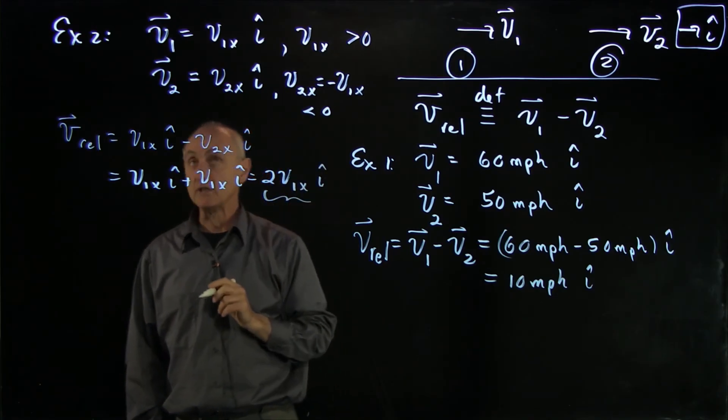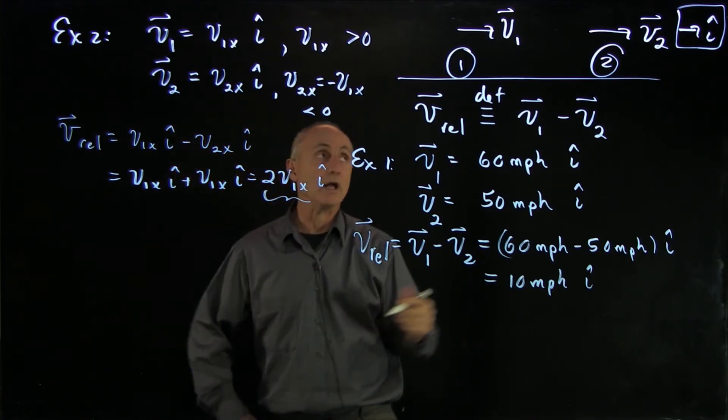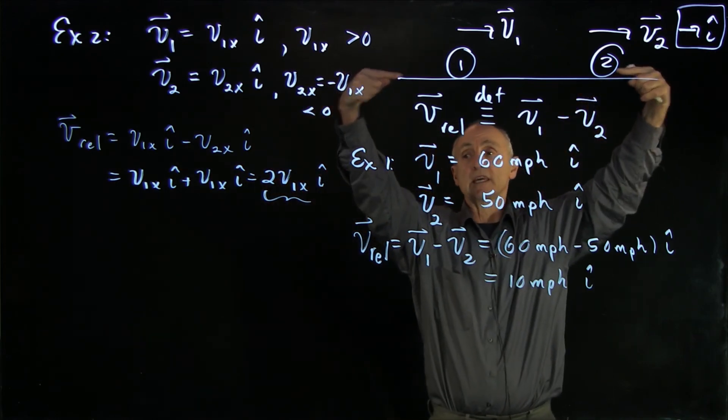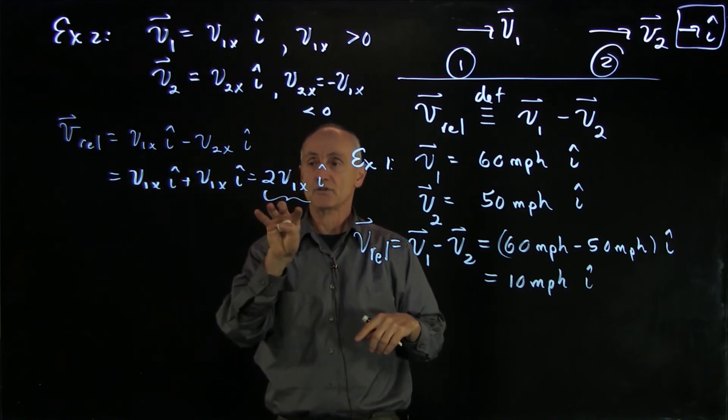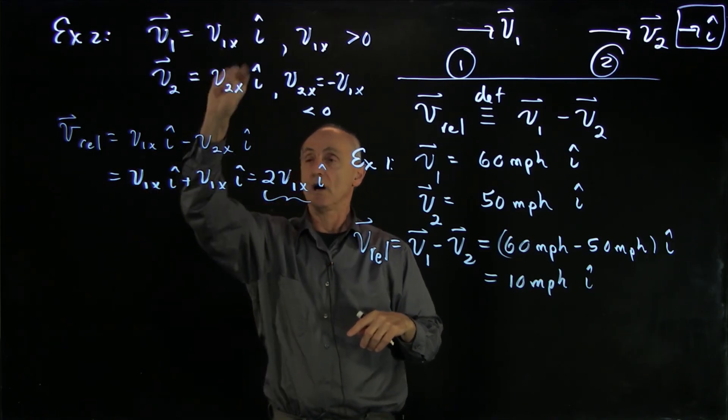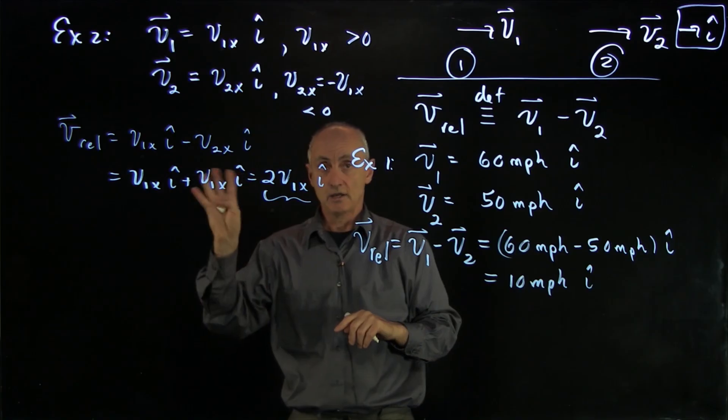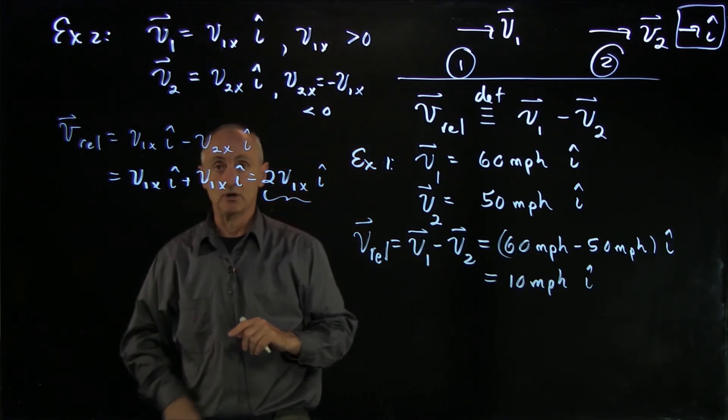So the relative velocity in this case has a component that's twice the speed of v1. If two objects are moving together at the same speed, the relative velocity, the way we've defined it, has twice the magnitude of either velocity.